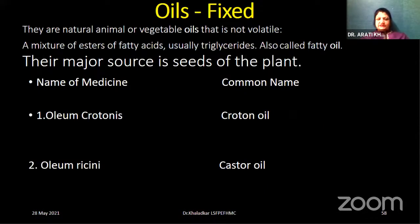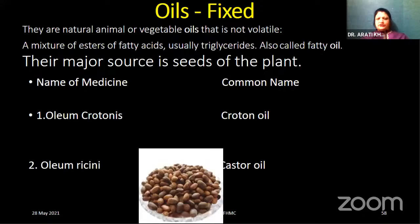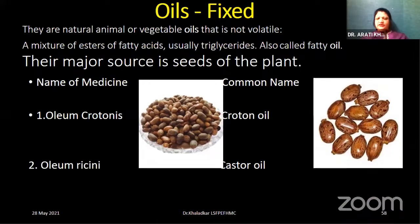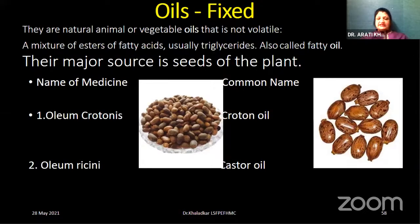Other sources include fixed oils: oleum crotonis as croton oil, and oleum ricini as castor oil. These are basically fixed oils prepared from the seed of the plant, also called fatty oils, and are a mixture of fatty acids.